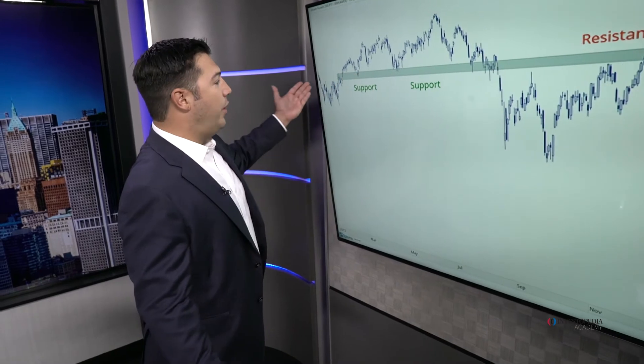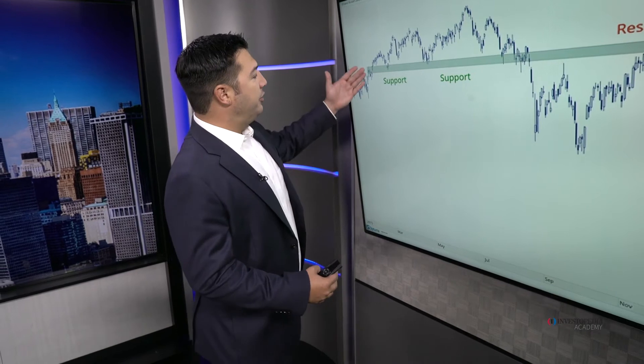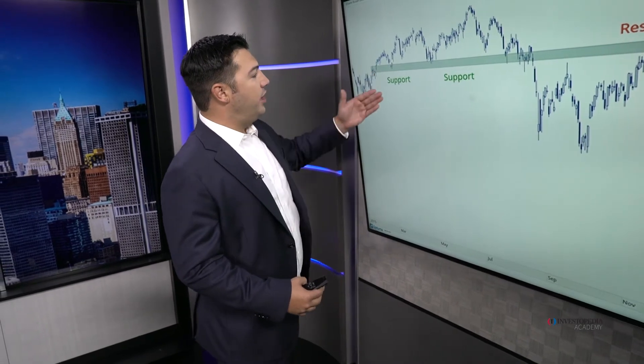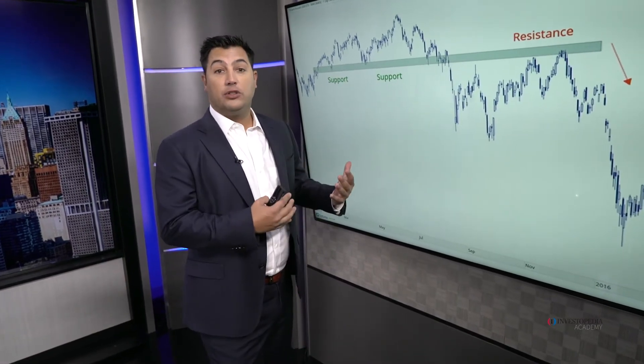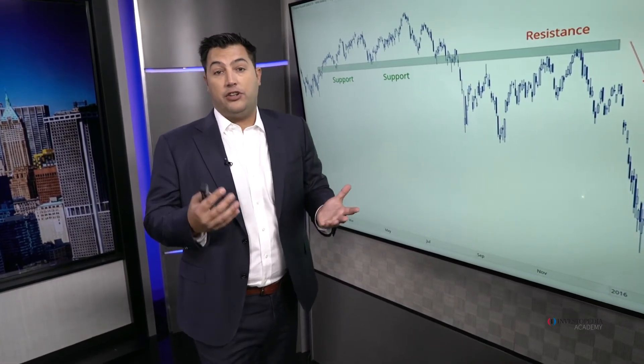There was support near the 120 level because there were more buyers than sellers — more demand than supply. The more times a level is tested, the higher the likelihood that it's going to break, because anybody willing to buy at those levels will have already done so and there just aren't any buyers left.